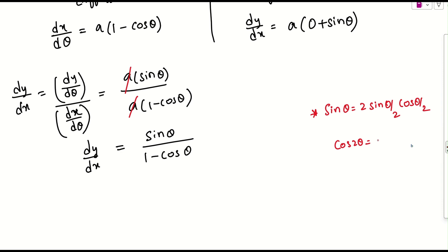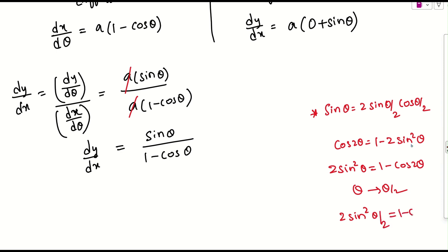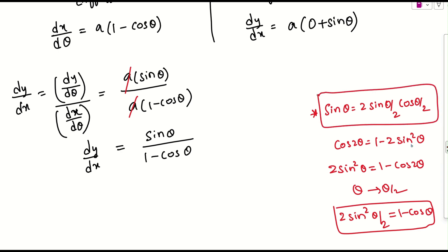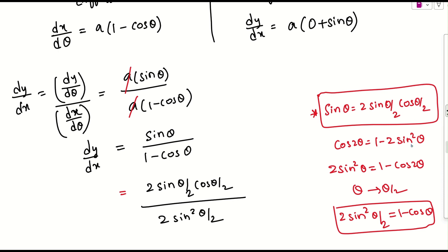Using cos2θ = 1 - 2sin²θ, we get 2sin²θ = 1 - cos2θ. Replacing θ with θ/2: 2sin²(θ/2) = 1 - cosθ. Applying both formulas: the numerator becomes 2·sin(θ/2)·cos(θ/2) and the denominator becomes 2sin²(θ/2).